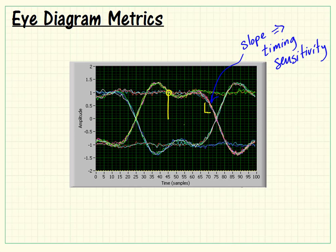For example, supposing this is our optimum sampling point, the notion of timing sensitivity is how far can you be in error on that optimum before you start running into troubles.